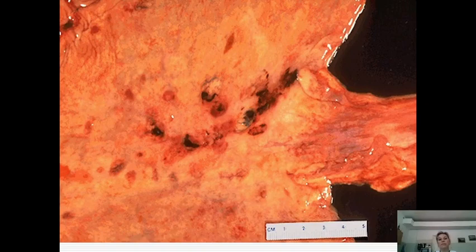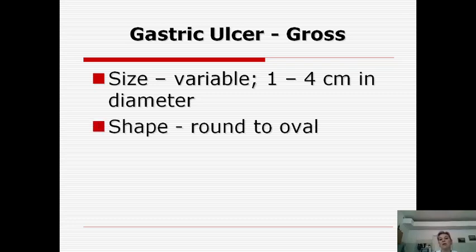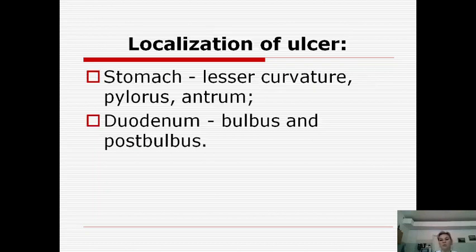In this photo you can see many small hemorrhagic erosions and pigment hematin. Regarding the gross features of peptic ulcer: in the stomach the size is variable — one, two, three, or four centimeters in diameter. Shape is more often oval or round. Localization in the stomach is the lesser curvature, pylorus, and antrum. In the duodenum, the bulbus and post-bulbar part are affected.